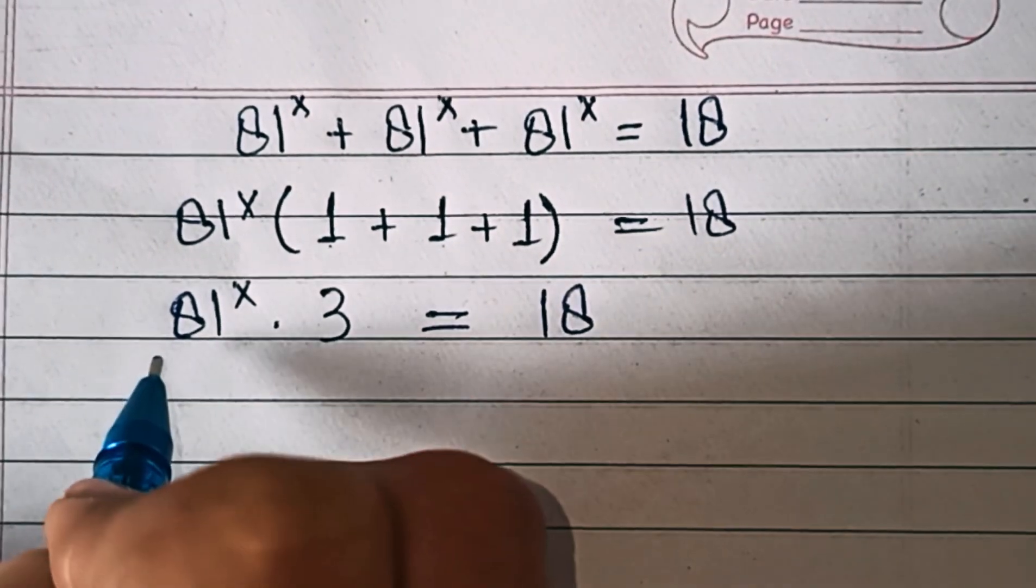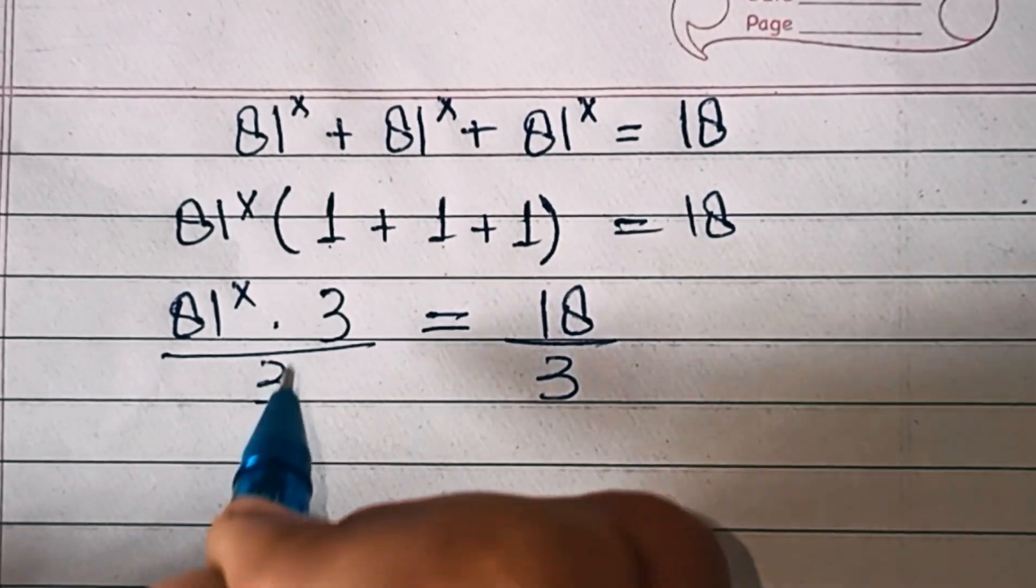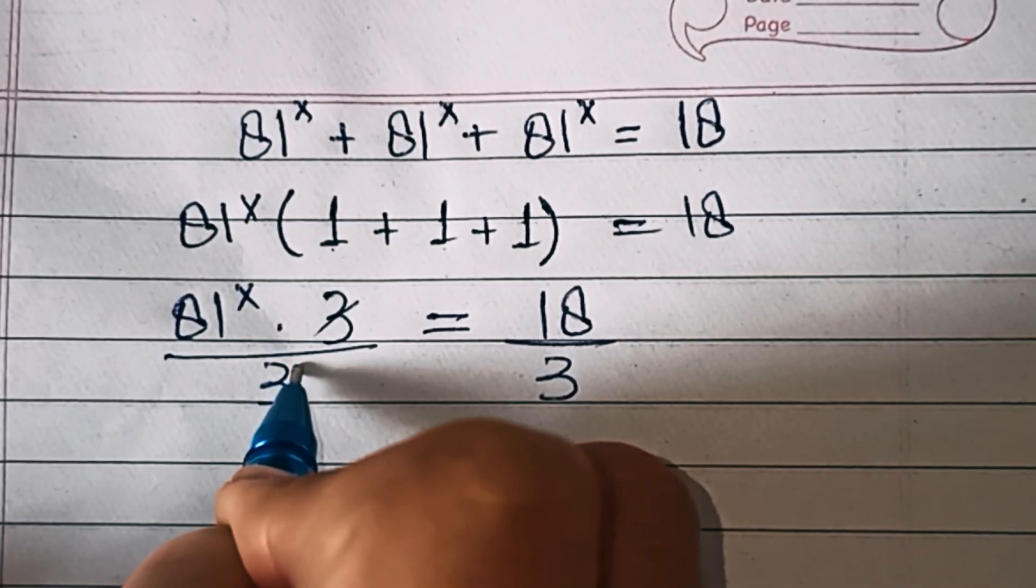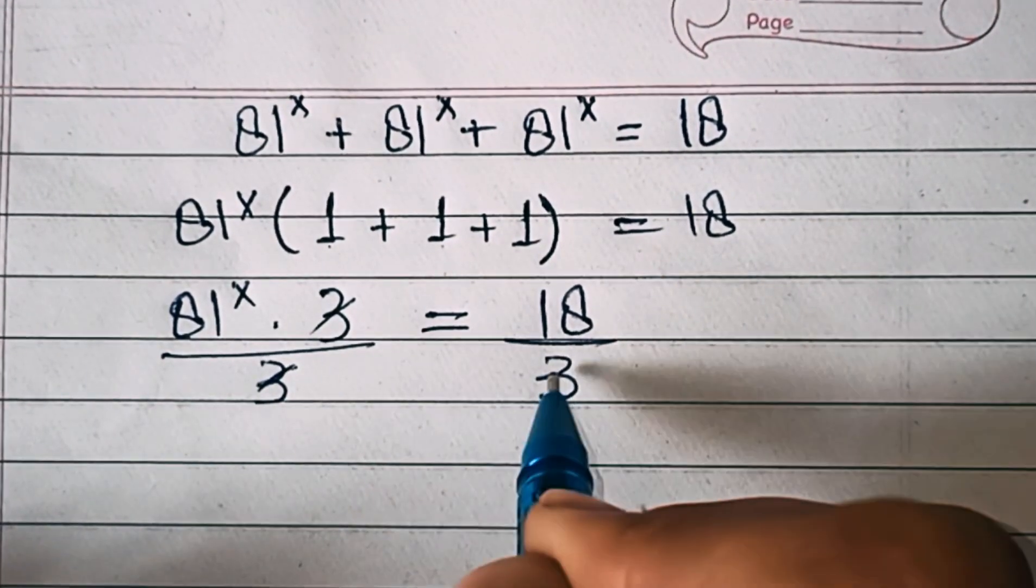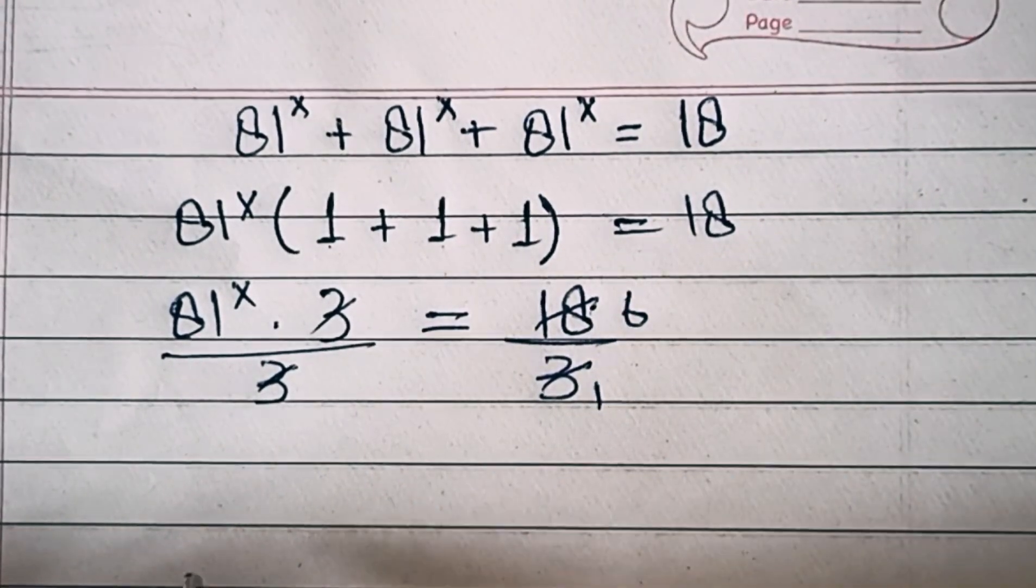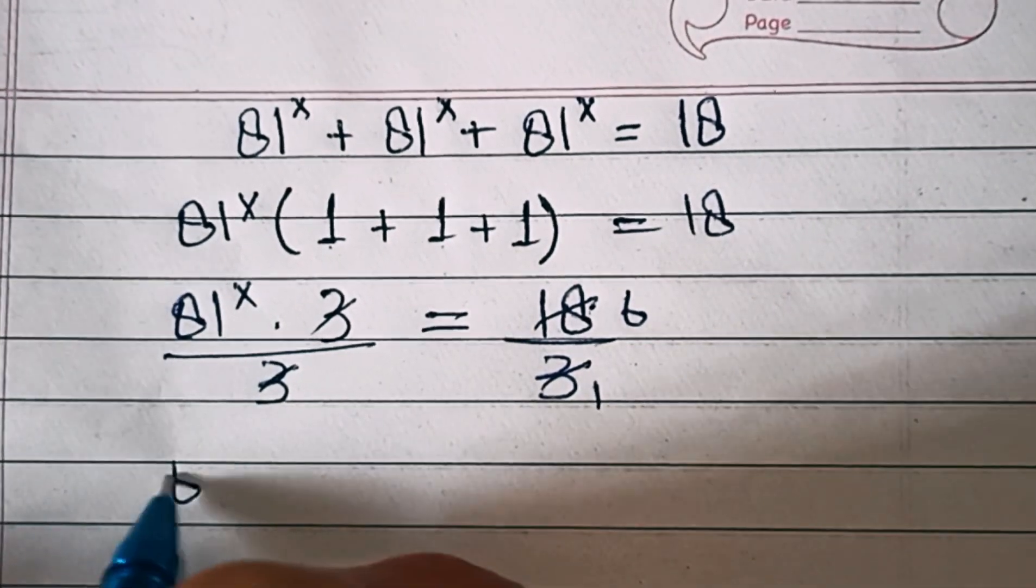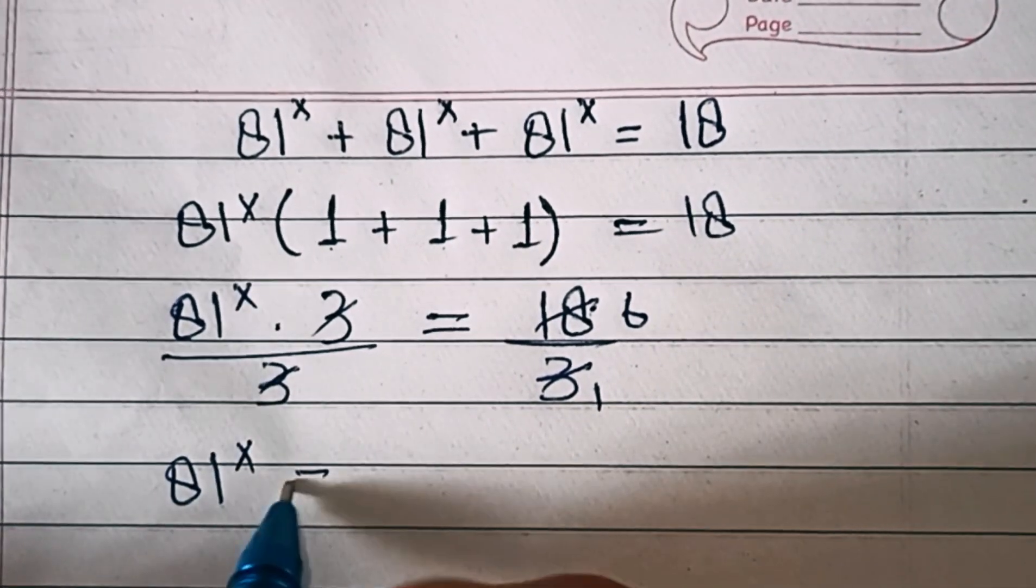Then we'll divide both sides by 3, so the 3s cancel out. 18 divided by 3 is 6, so this equals 81 power x equals 6.